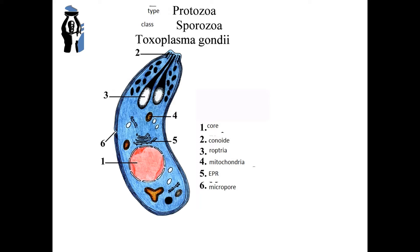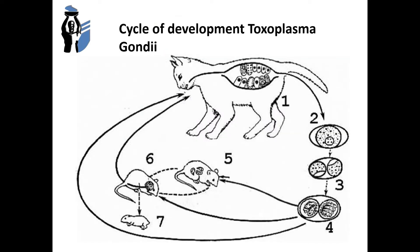The cycle of development of Toxoplasma gondii is shown on the screen. There are two stages in the life cycle of Toxoplasma: intestinal and extra-intestinal tissue stage. The definitive hosts are representatives of Felinae, domestic cats most often. In the definitive host body, the intestinal phase occurs.